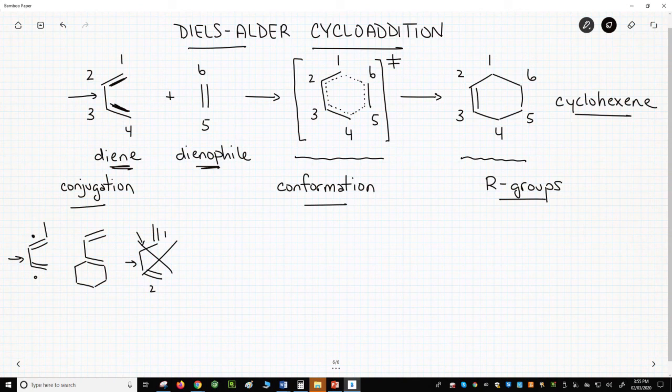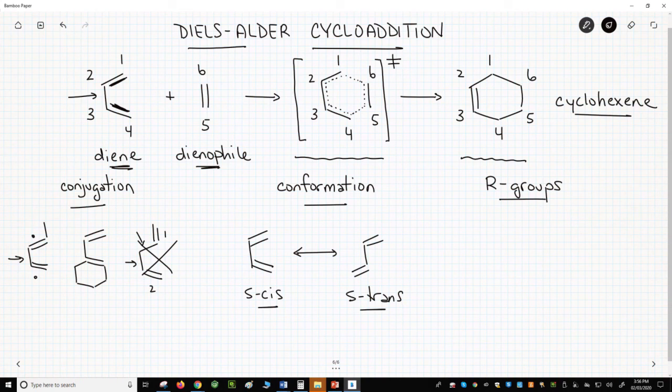Second, and still with the diene, let's talk about the conformation of the diene. Our original diene has two preferred conformations. This is the original one that we've shown. This is called the S-cis conformation and an additional one. This is called S-trans.